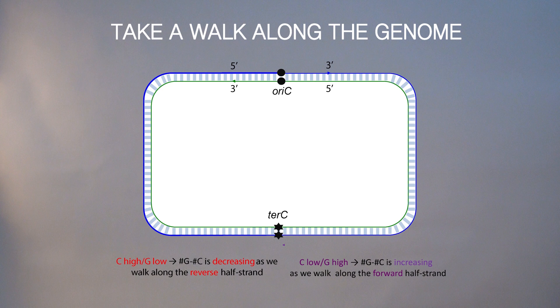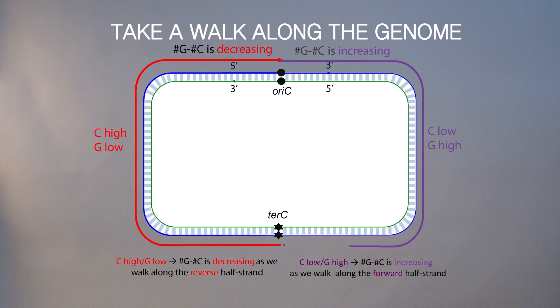Now, keeping this in mind, let's take a walk along the genome. We start at terminus and let's say we move from terminus according to the red line to origin. In this case, we move along the strand where C is high and G is low, which means that G minus C is decreasing as we walk. But when we walk along this half strand, C is low and G is high, which means G minus C, total number of nucleotide G minus total number of nucleotide C is increasing as we walk.